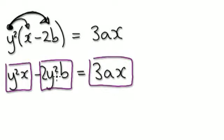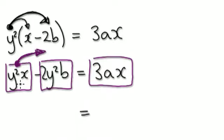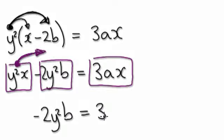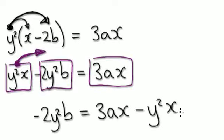Try to get all the x's on one side. I can move this block to the other side. Inside your mind, take away y squared. So on the left hand side you have minus 2y squared b. On the right hand side you have 3ax, then take away y squared x.